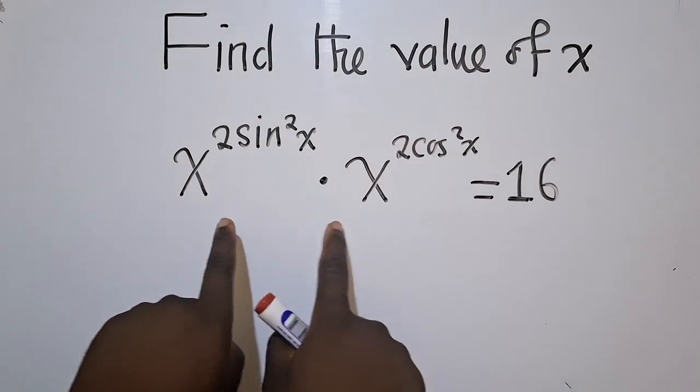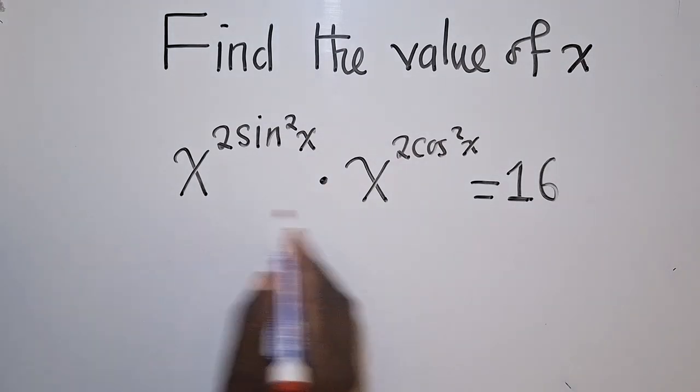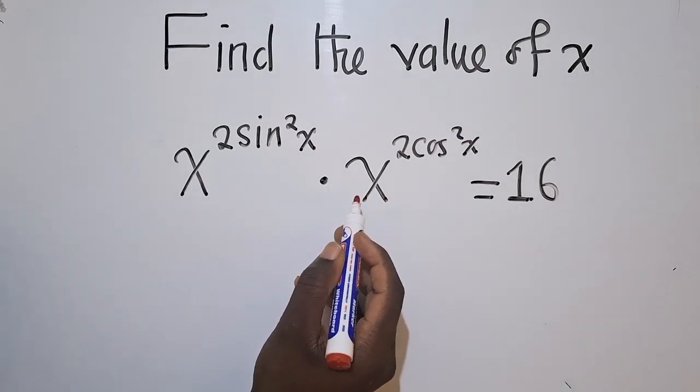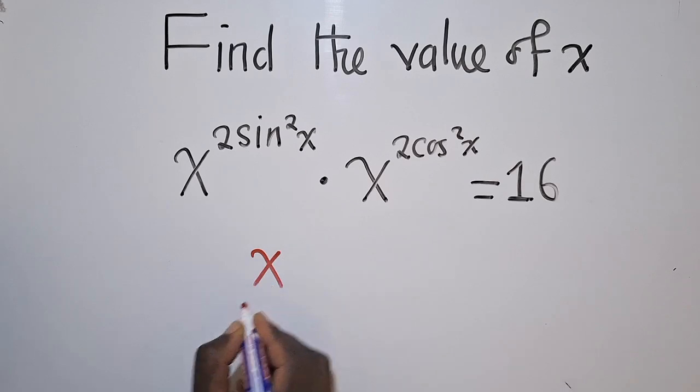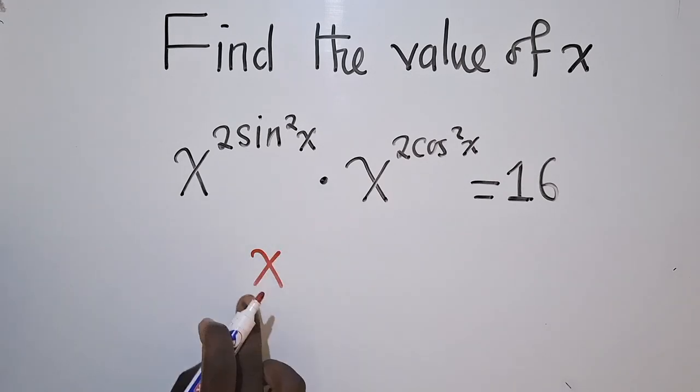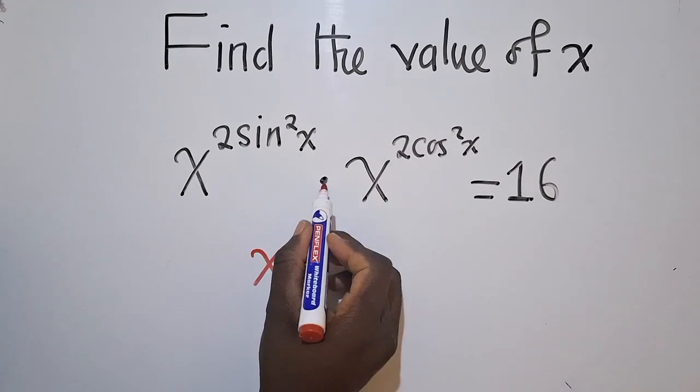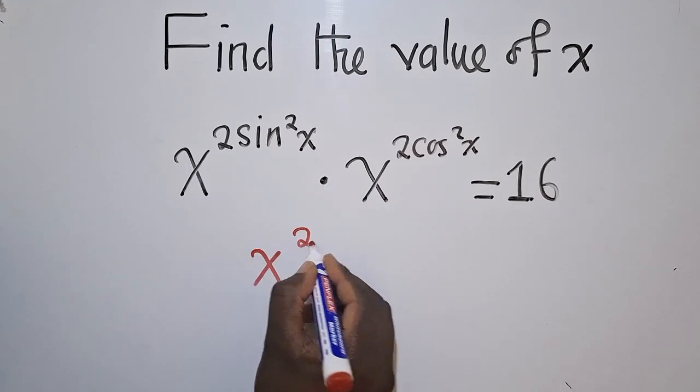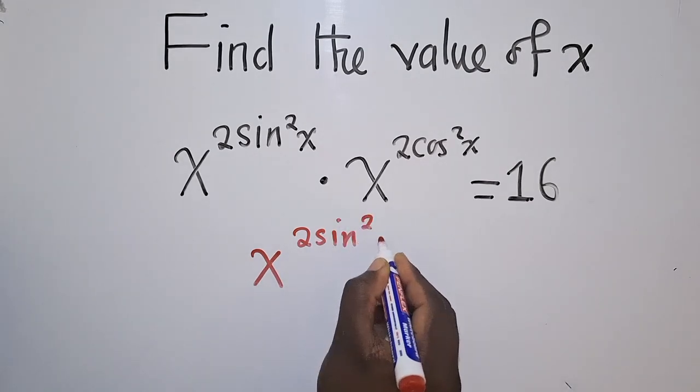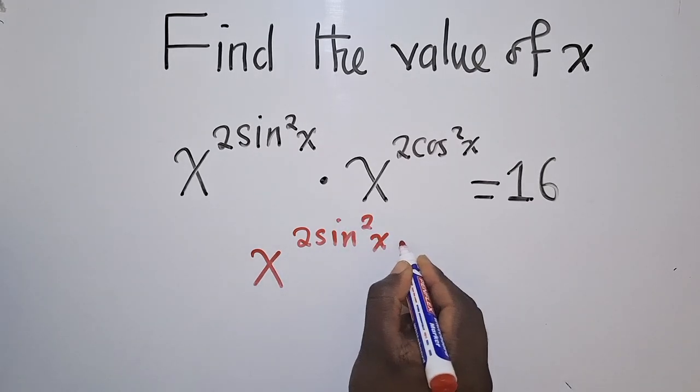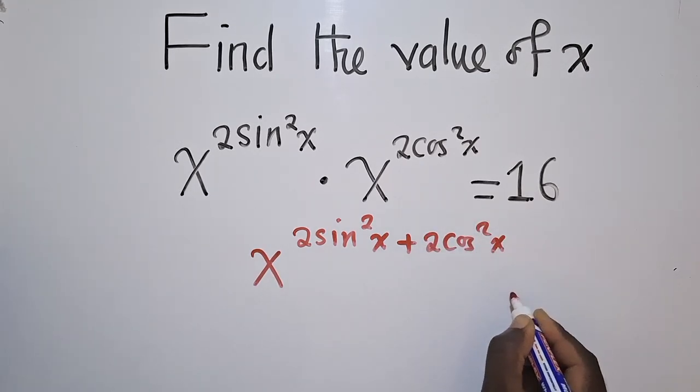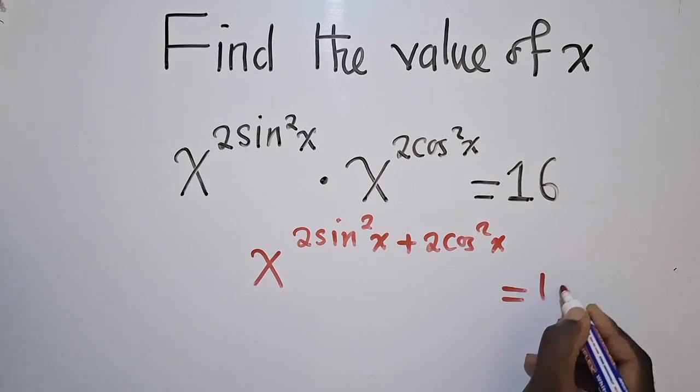I've got this question right over here. We need to find the value of X. To find the value of X here, we are going to consider these two bases. Since they are similar, we shall just say X, we just write one base. This dot means multiplication.